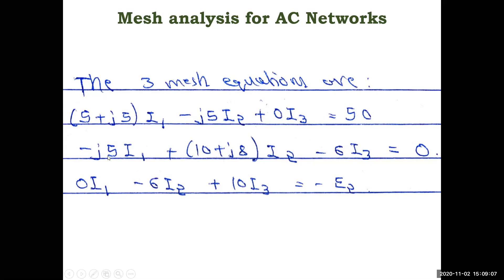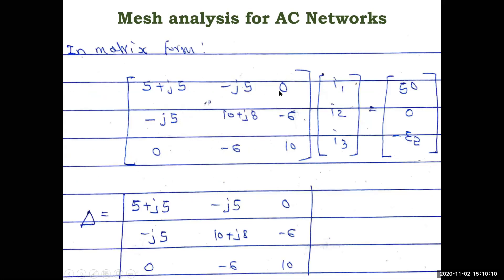For mesh 3: there is no connection to mesh 1, so 0·I1. The mutual term with mesh 2 is −6·I2, and the self-impedance is 6 + 4 = 10 (no reactance), so 10·I3. The current direction is downward and the voltage source E2 is directed upward, so the right-hand side is −E2. These three equations are then written in matrix form: all coefficients of I1, I2, I3 form the impedance matrix, multiplied by the column vector [I1, I2, I3]^T, equaling the source column [50, 0, −E2]^T.